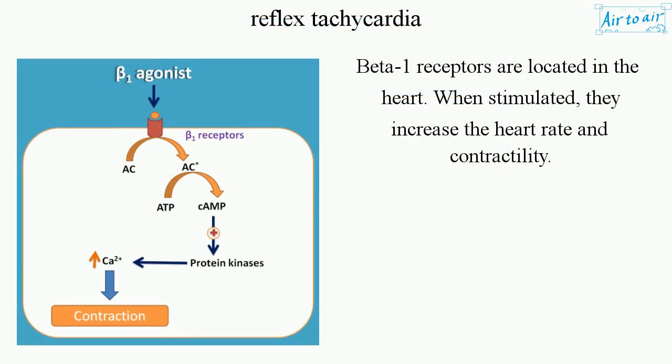Beta-1 receptors are located in the heart. When stimulated, they increase the heart rate and contractility.